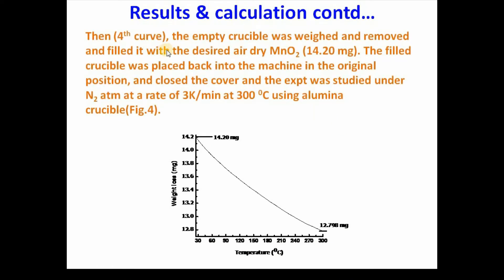Then, for the fourth curve, the empty crucible was removed and filled with the desired air-dried manganese dioxide. I have used 14.20 mg. The filled crucible was placed back into the machine in the original position, the cover was closed, and the experiment was started under the set conditions. Here is the figure for mass loss from 14.02 mg to 12.798 mg.